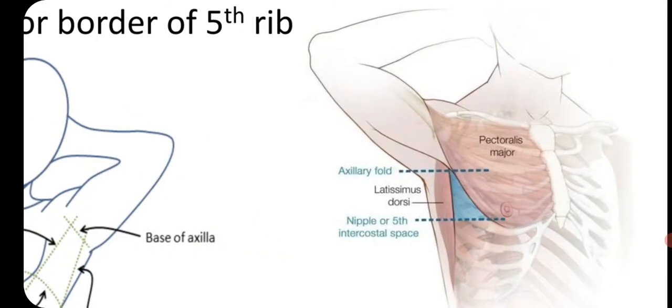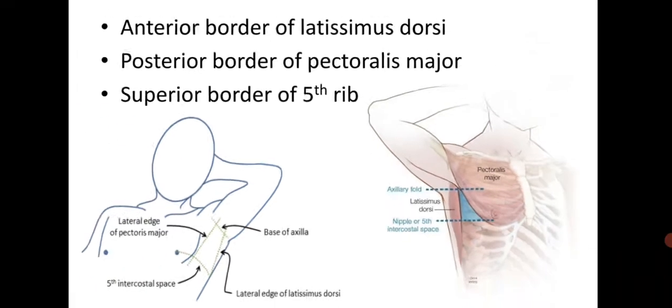Here you can see the triangle of safety: pectoralis major, latissimus dorsi anterior border, and the fifth rib.